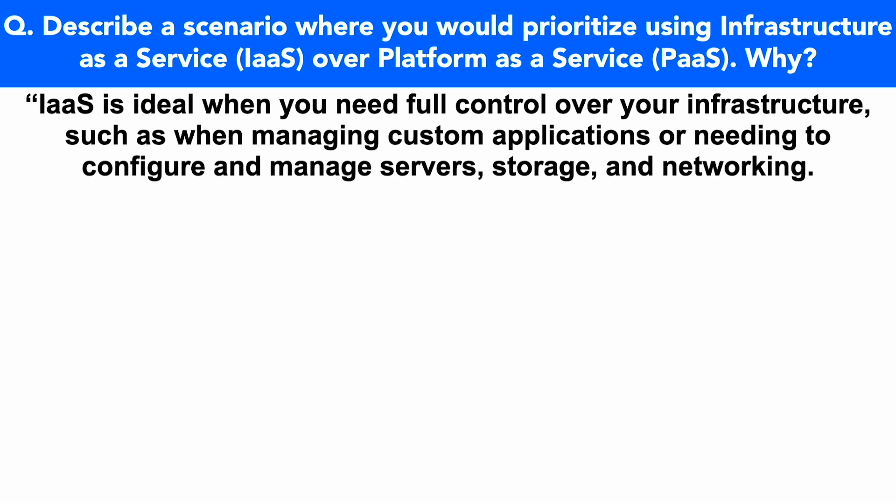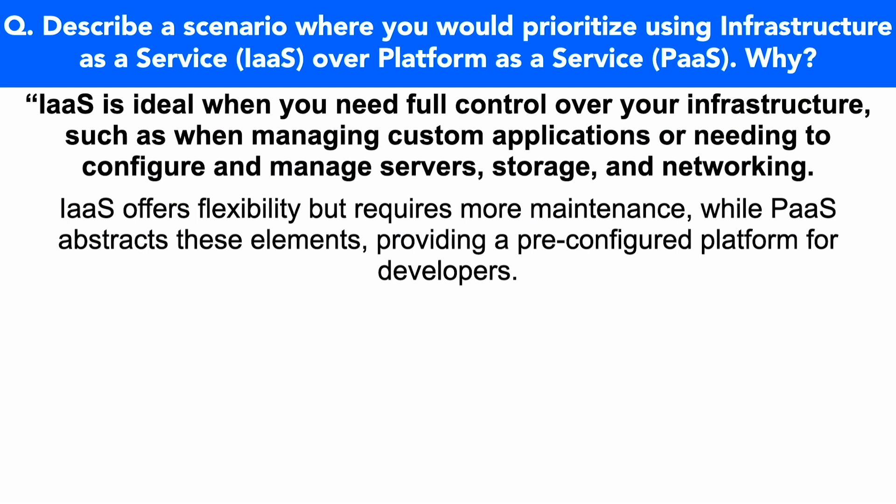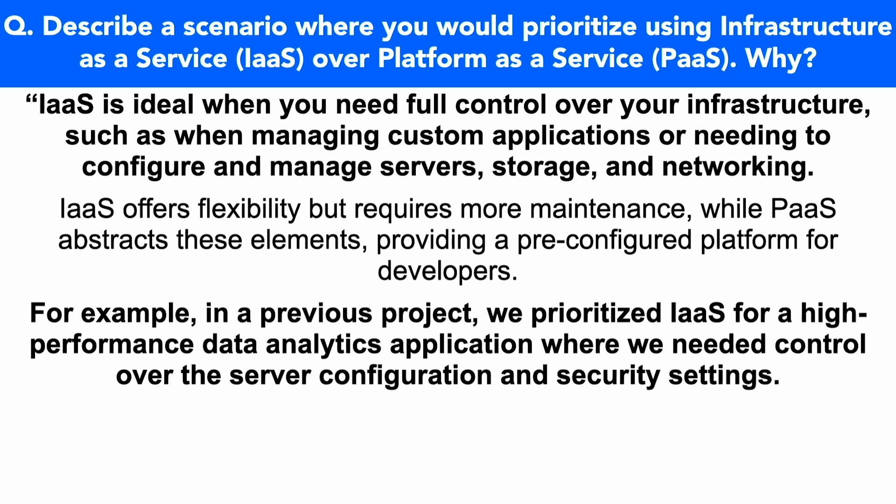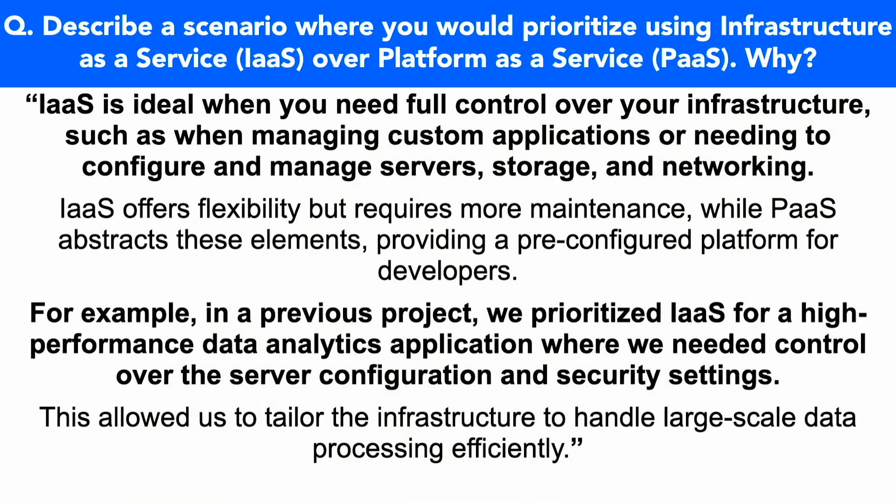Infrastructure as a service is ideal when you need full control over your infrastructure, such as when managing custom applications or needing to configure and manage servers, storage and networking. IaaS offers flexibility but requires more maintenance, while platform as a service abstracts these elements providing a pre-configured platform for developers. For example, in a previous project we prioritized IaaS for a high-performance data analytics application where we needed control over the server configuration and security settings, which allowed us to tailor the infrastructure to handle large-scale data processing efficiently.